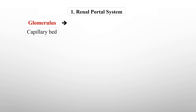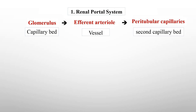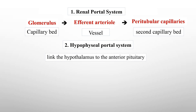There are three portal systems in the human body. The first is the renal portal system, in which the glomerulus gives rise to a portal vessel called the efferent arteriole, which then gives rise to the second capillary bed, the peritubular capillary. The second is the hypophyseal portal system, linking the hypothalamus of the brain to the anterior pituitary gland. The third is the hepatic portal system, which is found in the liver.